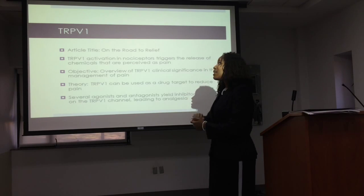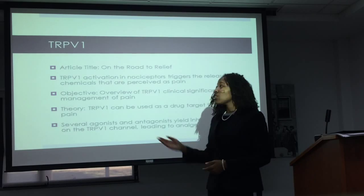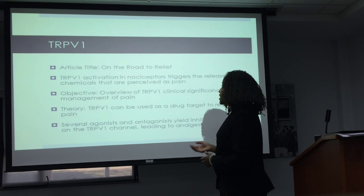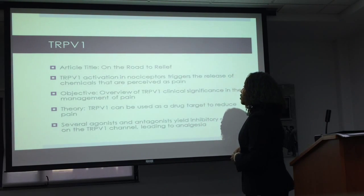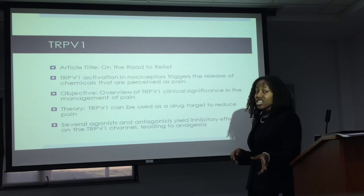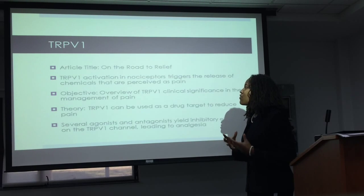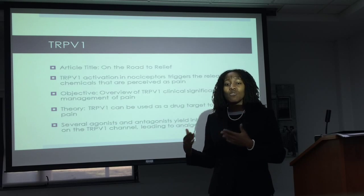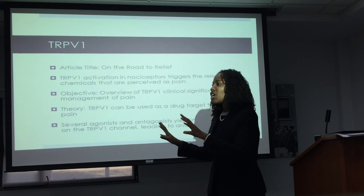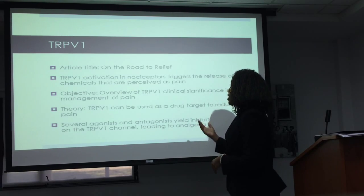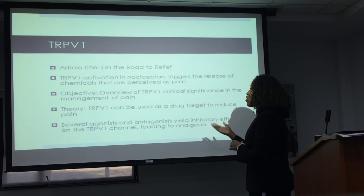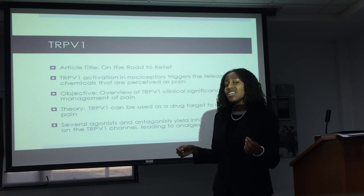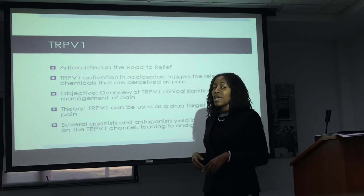Let's talk about TRP V1. This article is entitled 'On the Road to Relief,' and it discusses how TRP V1 activation in nociceptors triggers the release of chemicals that are perceived as pain. So once this channel is activated, neurotransmitters are released and you feel pain. The objective of this article was to give an overview of TRP V1, its clinical significance, and how it can be used to manage pain.